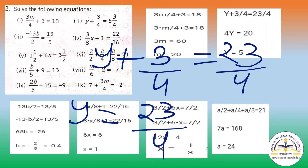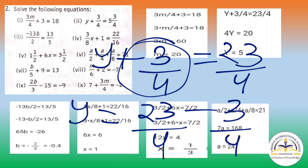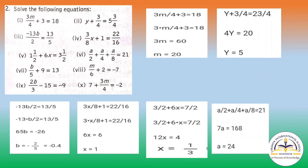You have to transfer 3 by 4 to the RHS. Since the denominator is the same, we get 23 minus 3 that is 20 by 4, which means y equals to 5. All the answers are given here; in the same manner you have to solve all the questions.